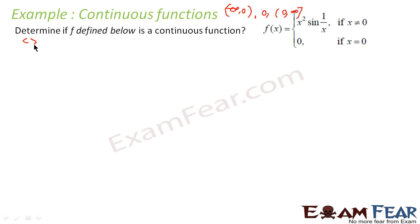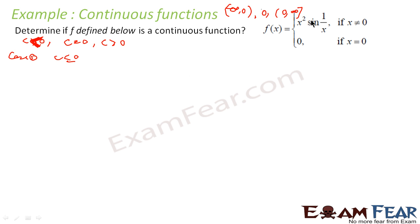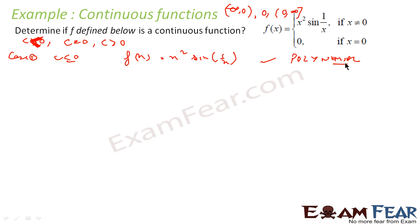Let's take case 1, that is c is less than 0. For c less than 0, f(x) is equal to x squared sin(1/x). This is also a polynomial function, so I can say that this is continuous.